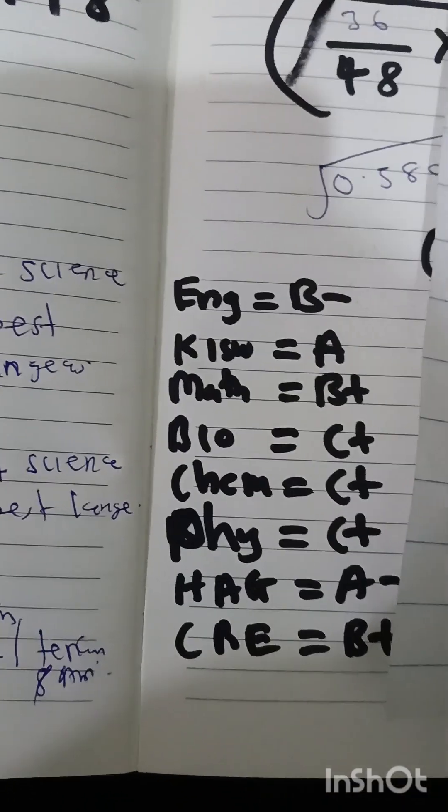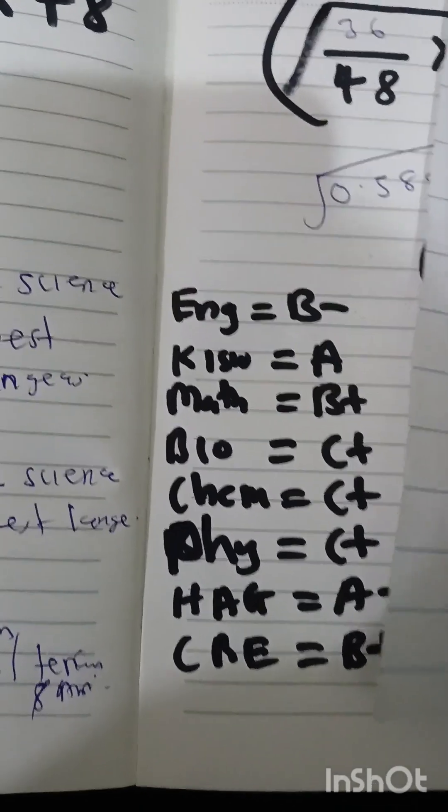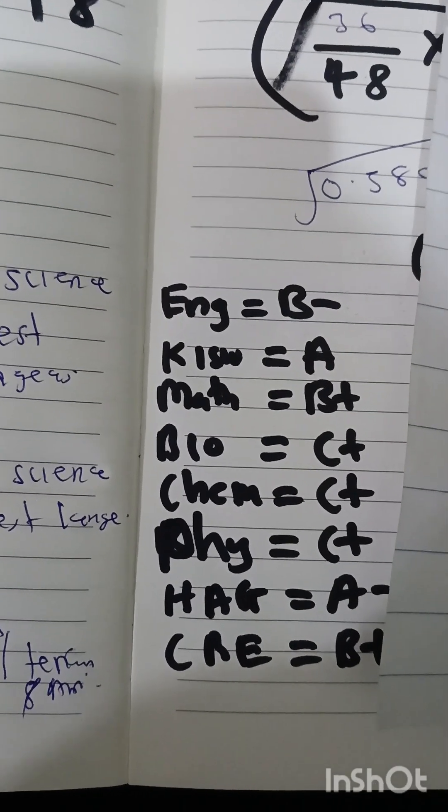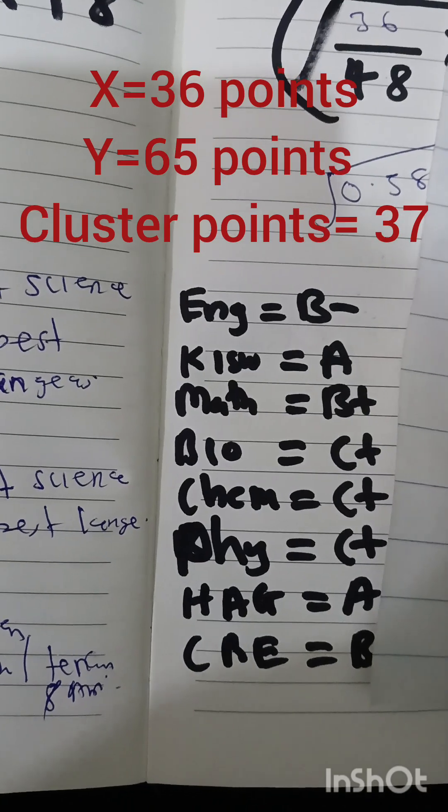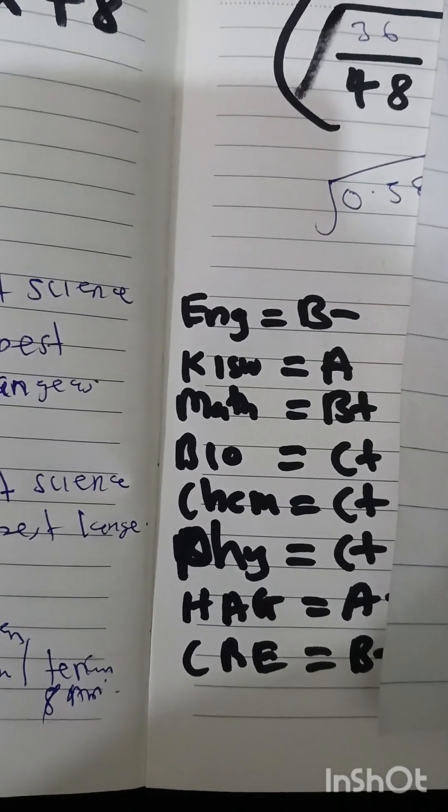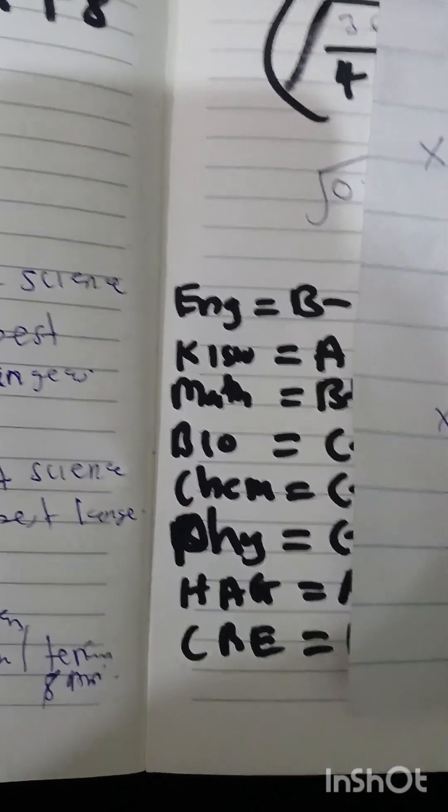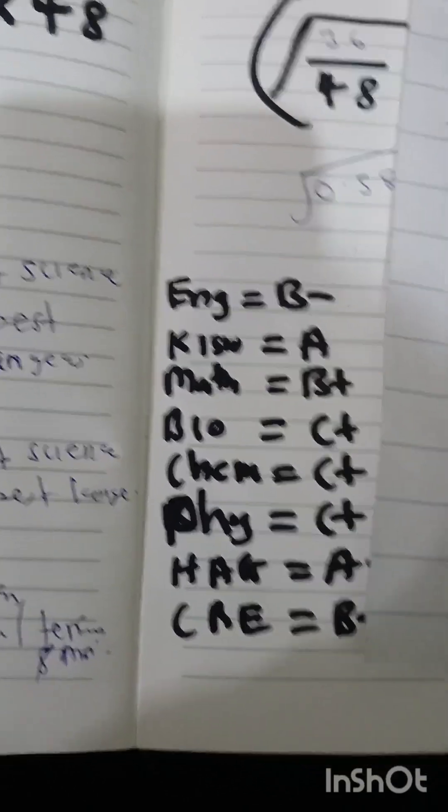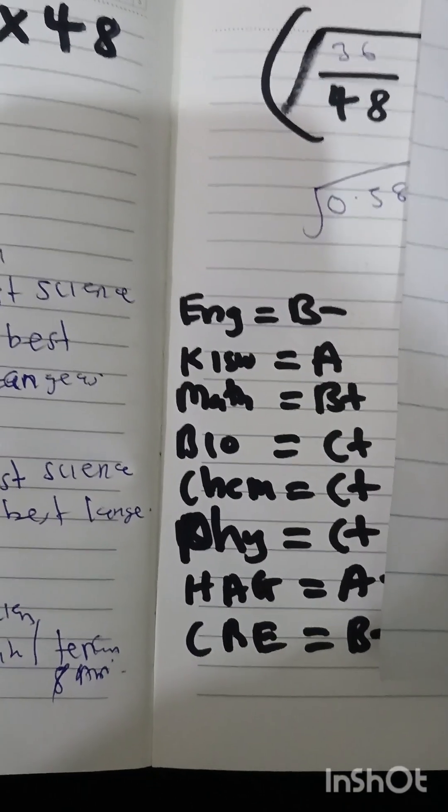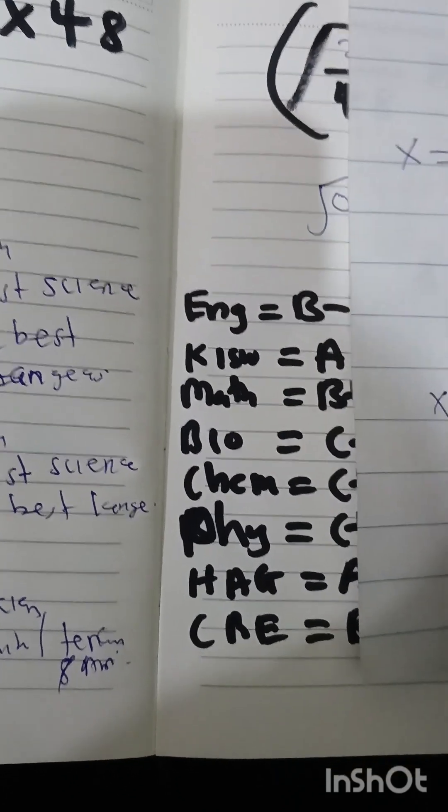Then two best sciences, we shall pick any two because the student has C plus in all the sciences. So we shall pick, let's say, biology and chemistry, which will be equivalent to 14 points, because C plus is equivalent to 7, 7 by 2 is 14. So when you add this, you get our x is 36.